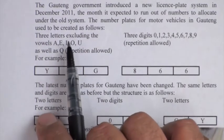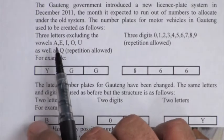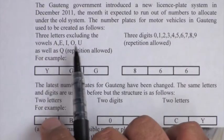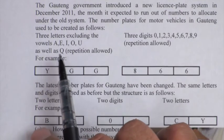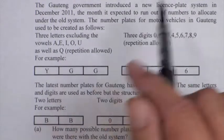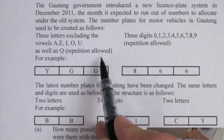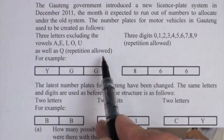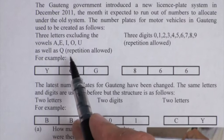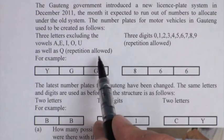Three letters excluding the vowels A, E, I, O, U as well as Q. Please remember, because it's letters, we need to know. And in this particular case, repetition is allowed. So that means that these letters may be used any number of times.